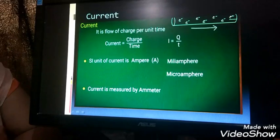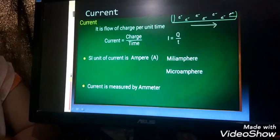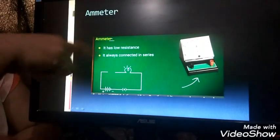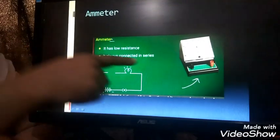And this current is measured by an instrument known as ammeter. Now this ammeter is the instrument which has got low resistance and it is always connected in series.